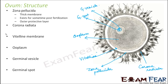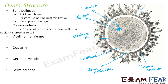Corona radiata consists of two to three layers of cells attached to zona pellucida. It is not a fixed number of layers. Its function is to supply vital proteins and nutrients — providing nourishment to the egg cell.